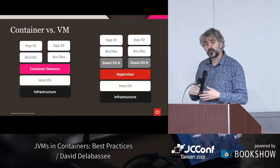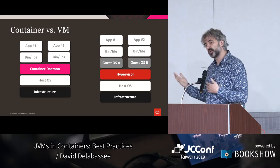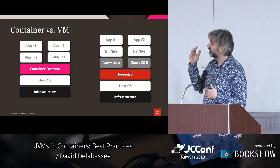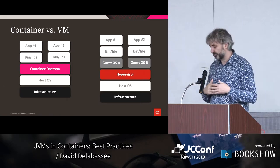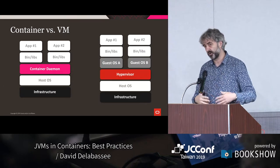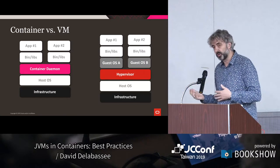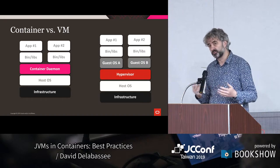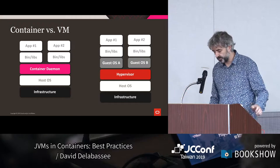In between, we have what we call kata containers, which provide strong isolation but with basically the speed of containers. A VM takes a lot of time to boot up — a container starts in a matter of seconds while a VM might take minutes. That's one of the drawbacks of VMs versus containers. Kata containers try to resolve that, offering all the benefits of containers with the isolation benefits of VMs.